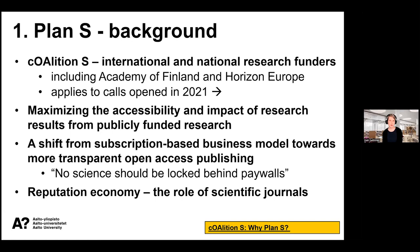Plan S acknowledges the current role of scientific journals and that researchers should have freedom to publish in those journals which are proper for them. However, at the same time they are trying to revise the current model of scientific publishing — which is based on subscription fees — so that it wouldn't be as important where you publish; instead, what you publish would make more difference.